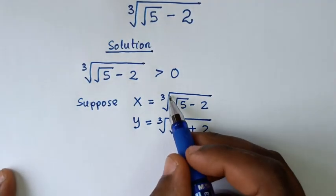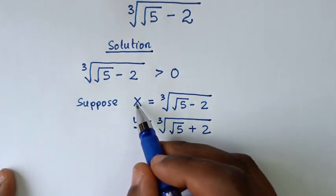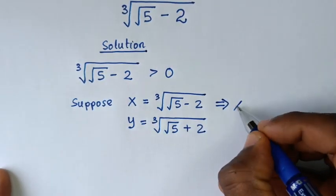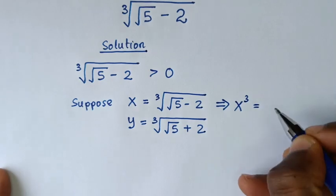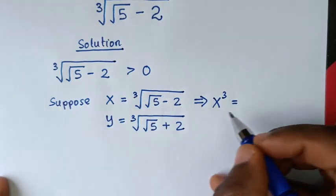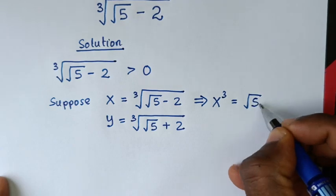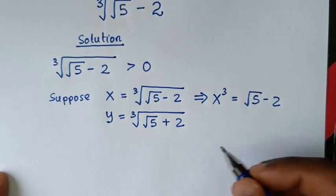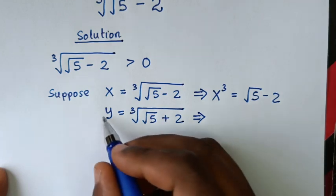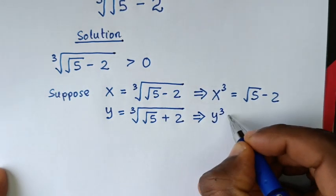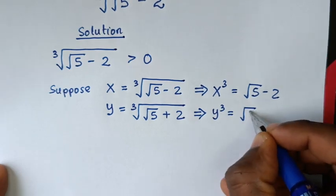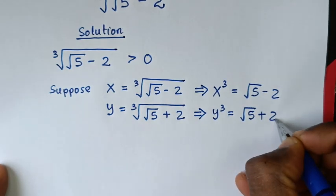To remove the cube root, we'll raise both sides to the power of 3. So x³ equals square root of 5 minus 2. Similarly, raising y to the power of 3, y³ equals square root of 5 plus 2.